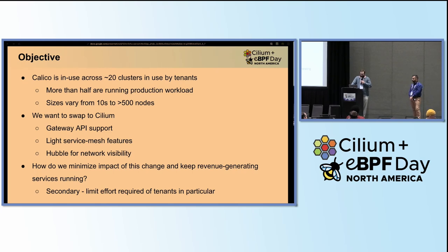We decided that we wanted to swap to Cilium. I'll talk a little bit more about our reasonings for that in the next slide, but for now I'll just say we're looking forward to some new features like Gateway API support, some of the light service mesh features, and of course Hubble for network visibility.